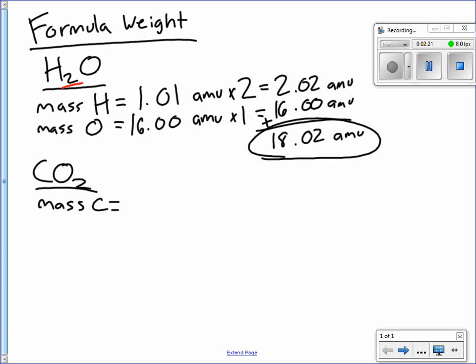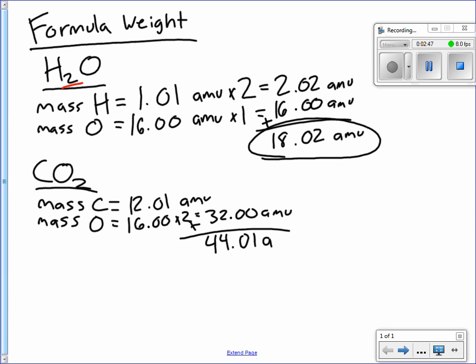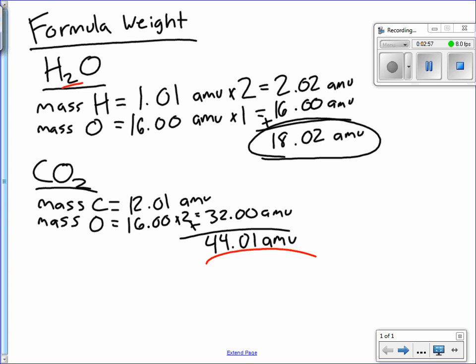Okay, mass of C. 12.01 AMU. Got that from the periodic table. Mass of O is 16.00 times 2. 32.00 AMU. Add those together, and we're going to get 44.01 AMU. And there's your answer. So that's the formula weight of CO2. So, fairly simple. Not really too complicated there.